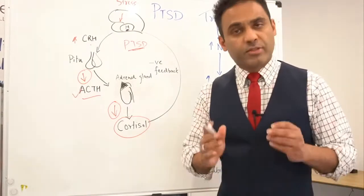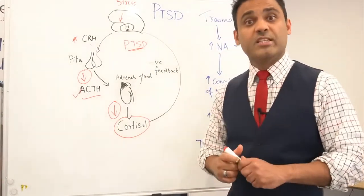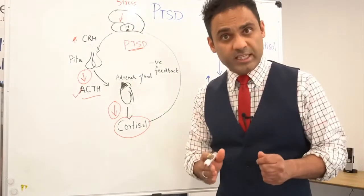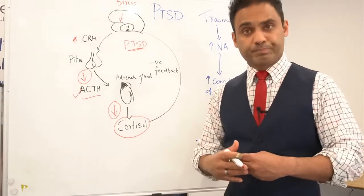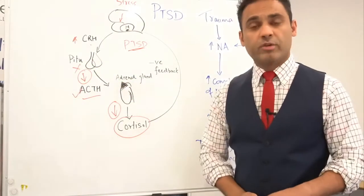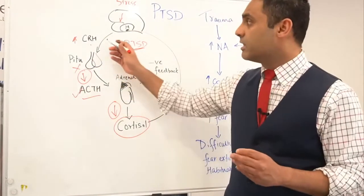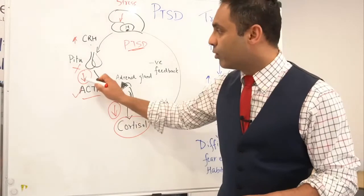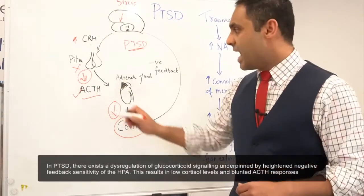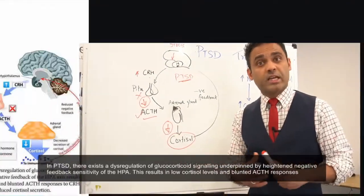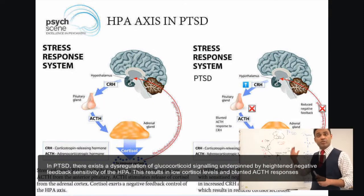But in post-traumatic stress disorder, this particular process is dysfunctional. Essentially, corticotropin releasing hormone is still released due to exposure to the stressful environment, but the receptors in the pituitary are sensitized — meaning they do not respond to signals from the corticotropin releasing hormone. Therefore, there is decreased ACTH and because of that, also decreased cortisol. Now this would seem very counterintuitive: decreased cortisol in post-traumatic stress disorder.